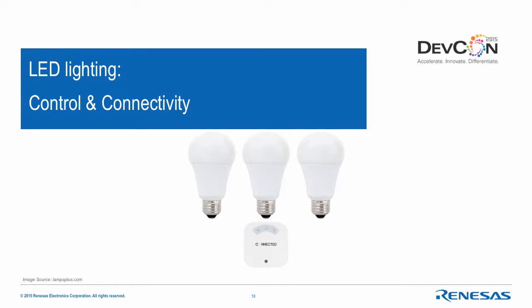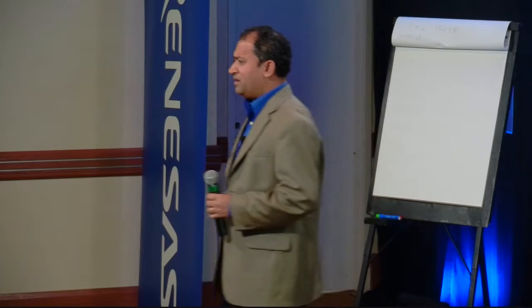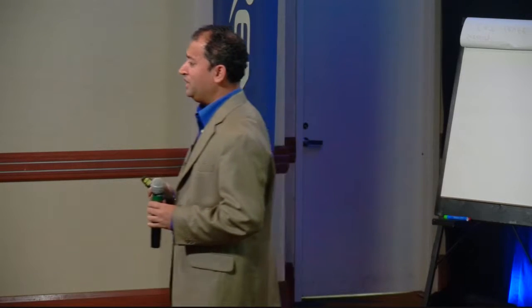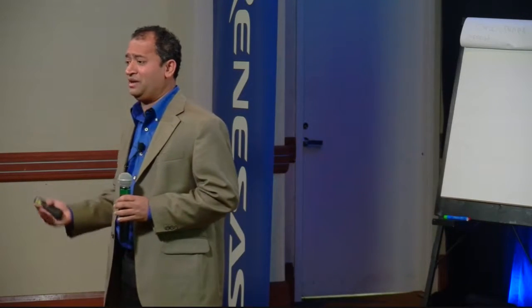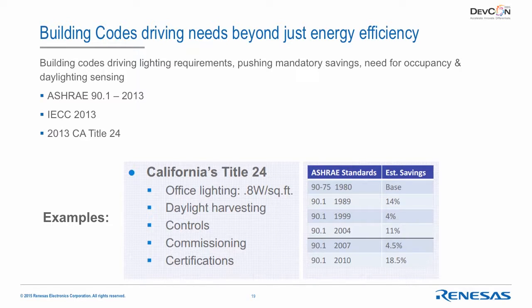So why control and connectivity? A big part is building codes. Regulations drove us from incandescent to LED; now building codes are driving control and connectivity into LED lighting. Building codes have been evolving — previously just heating and cooling — but now include maximum lighting output power, requirements to add sensors, daylight harvesting, occupancy sensors, and minimum quantifiable savings when adding controls. Standards like ASHRAE, IECC, and California Title 24 are all adding more codes geared toward lighting.